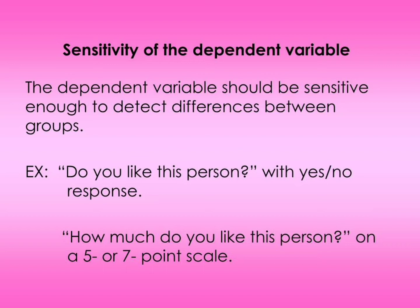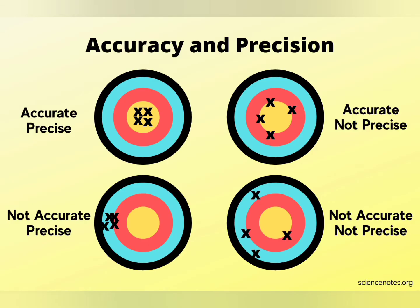The next measure is latency. Latency is the time it takes to begin a response — the time the subject takes to start the response. It is generally used in reaction time studies, where the experimenter provides a signal to which the participant responds. The time interval between the onset of the stimulus and the onset of the response is measured — not the total response time, but the start of the response.